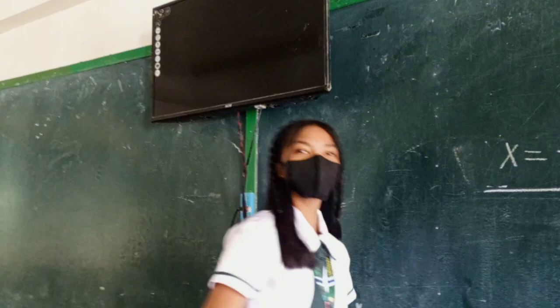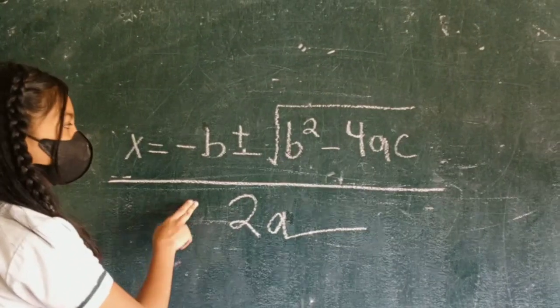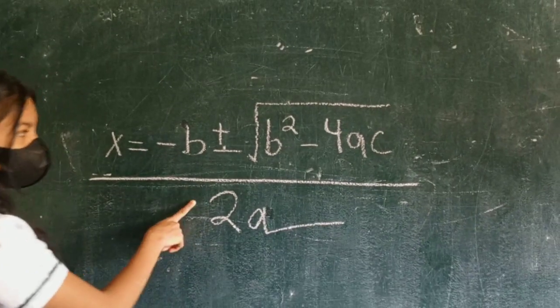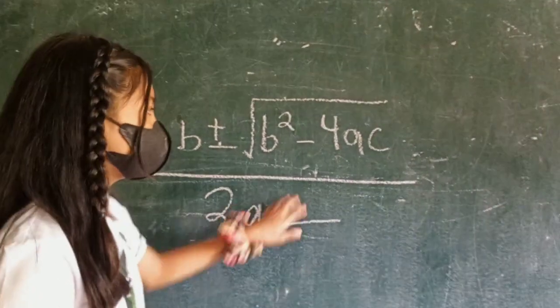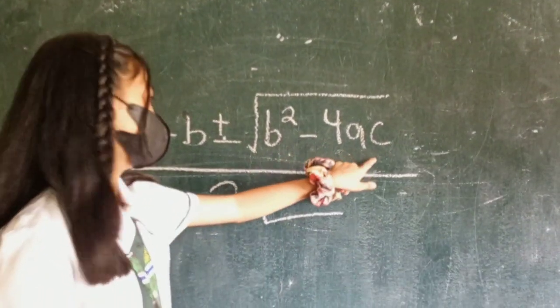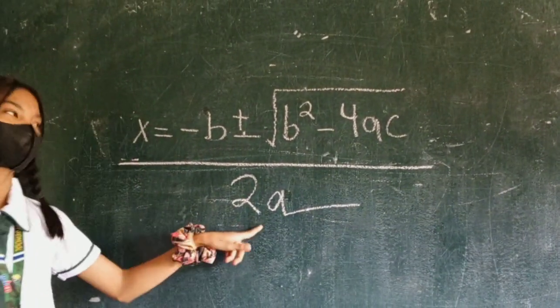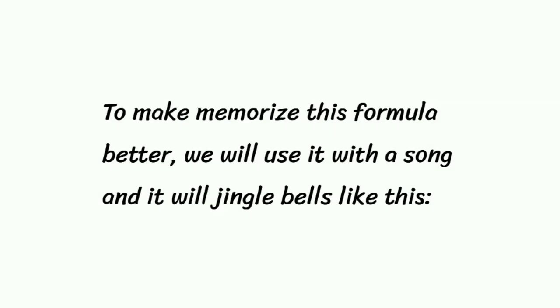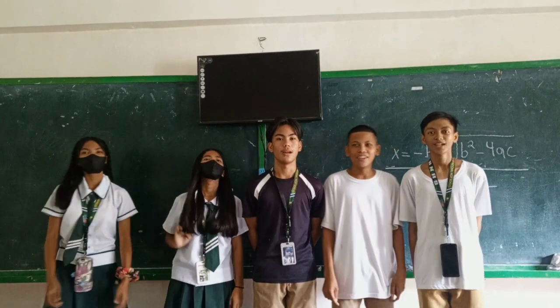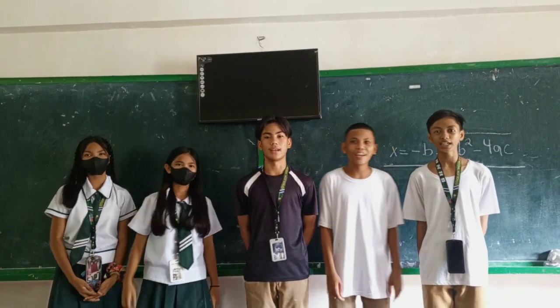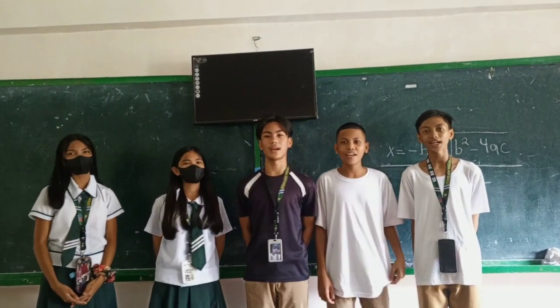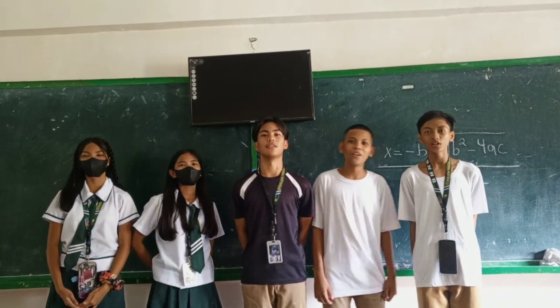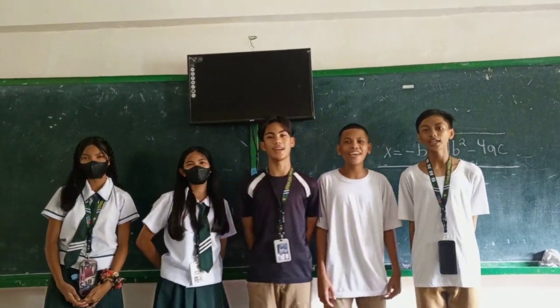Here's the quadratic equation formula: X equals negative B plus or minus radical B squared minus 4AC, divided by 2A.